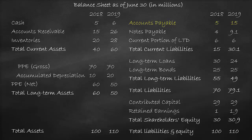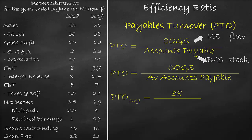So, in our formula, we will divide by the average accounts payables of ($15 million plus $5 million) divided by 2, which is equal to 3.8 times.